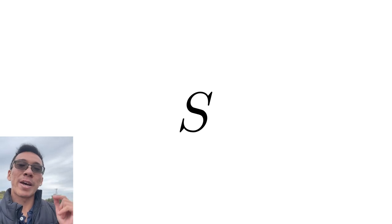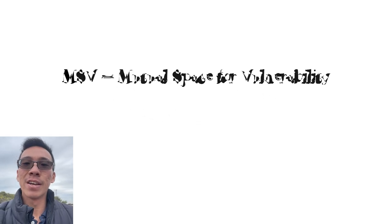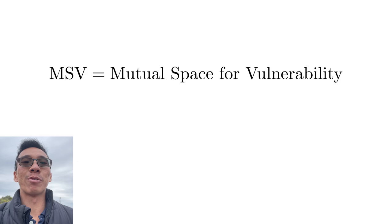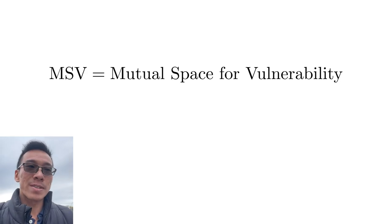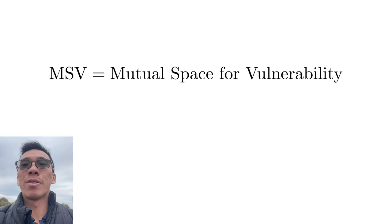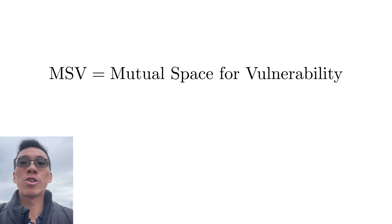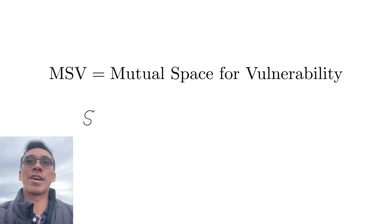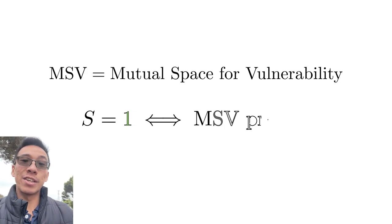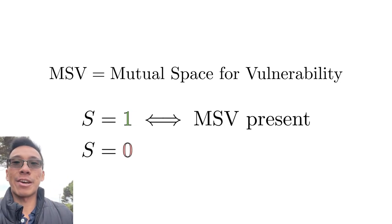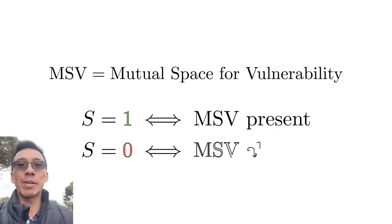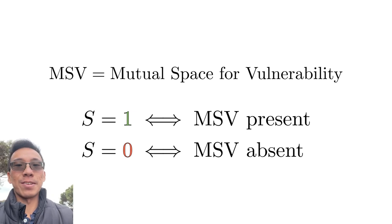To unpack the term S, let's abbreviate MSV for Mutual Space for Vulnerability. This refers to the space that two people can have in opening up about the more intimate or more genuine parts of their lives. This number is either 0 or 1. Either there is mutual space for vulnerability or there isn't.